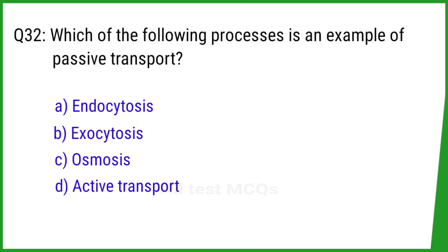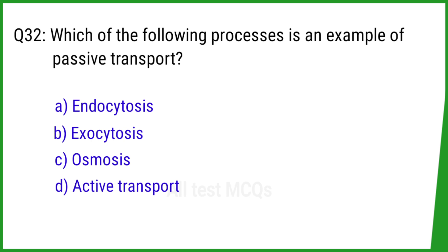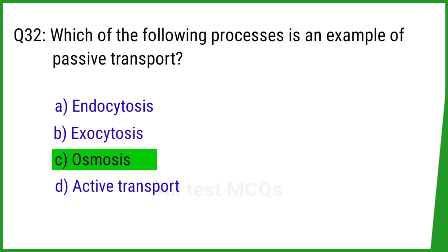Question number 32. Which of the following processes is an example of passive transport? The right answer is option C: Osmosis.